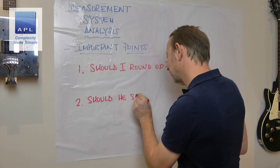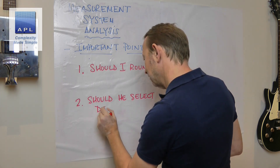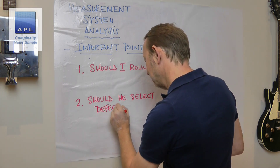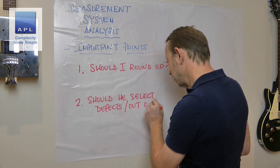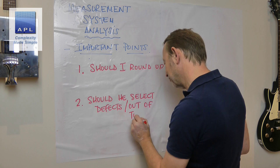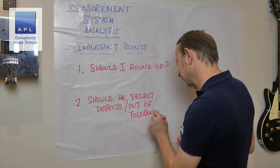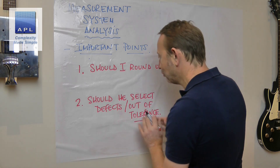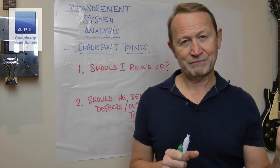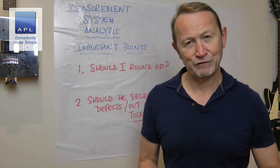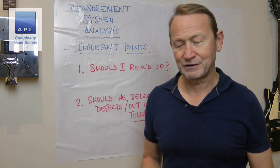The other question is: should he select out-of-tolerance parts? He's actually suggesting that he measures something quite a bit bigger than what the tolerance is aiming for, because he's been told he's got to include defects in the MSA.